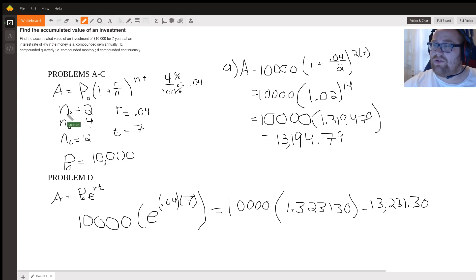Basically, for part A you have A equals $10,000, because $10,000 is our P naught, multiplied by one plus the rate of 4%, and 4% as a decimal is 4% divided by 100, which is 0.04. So 0.04 divided by 2, all raised to n, in this case 2, times t, in this case 7.